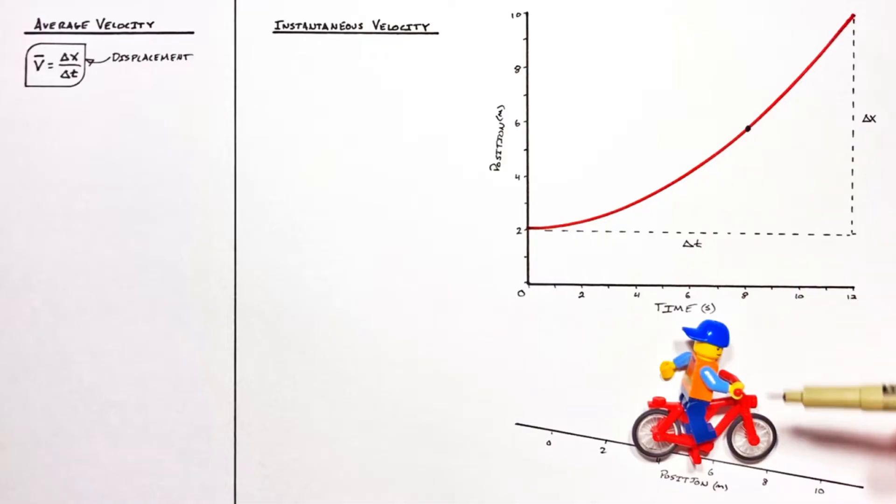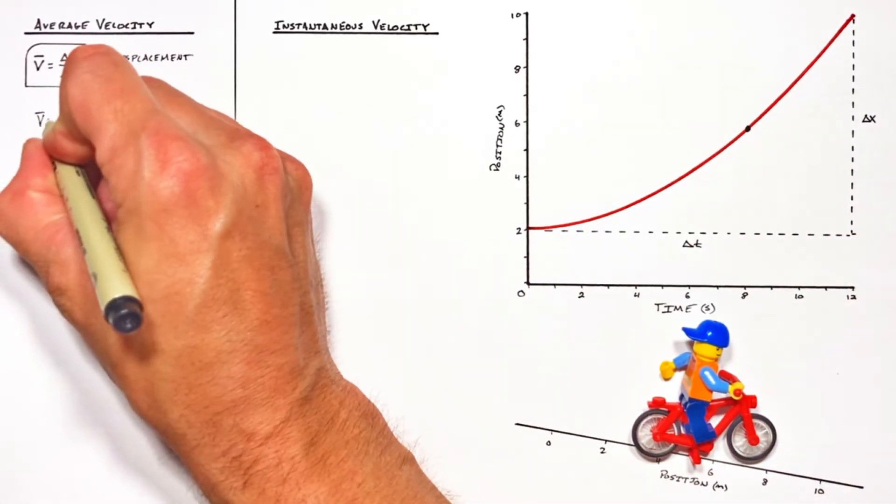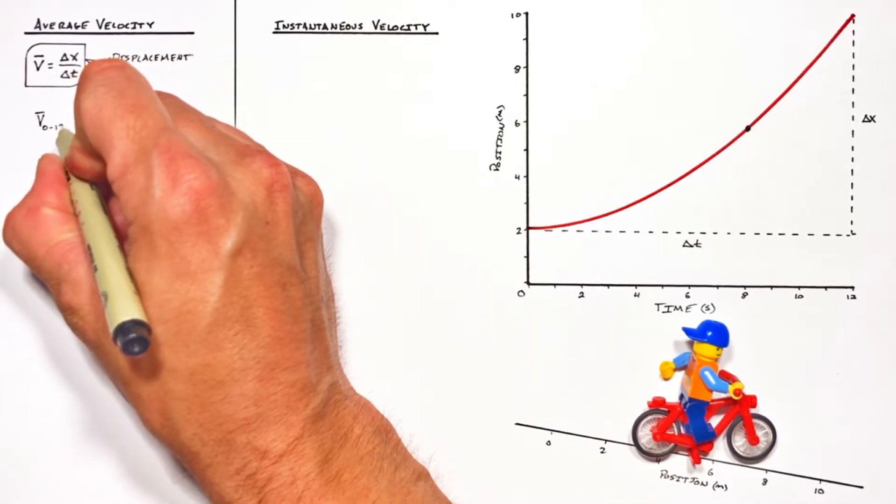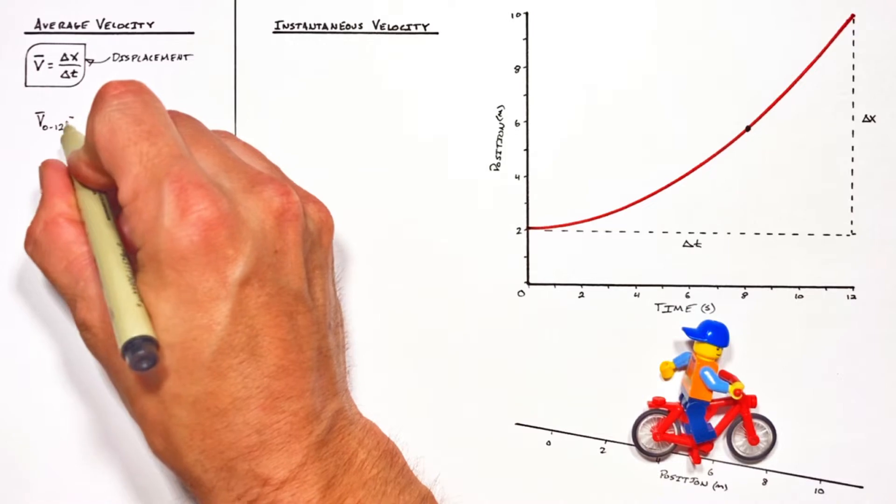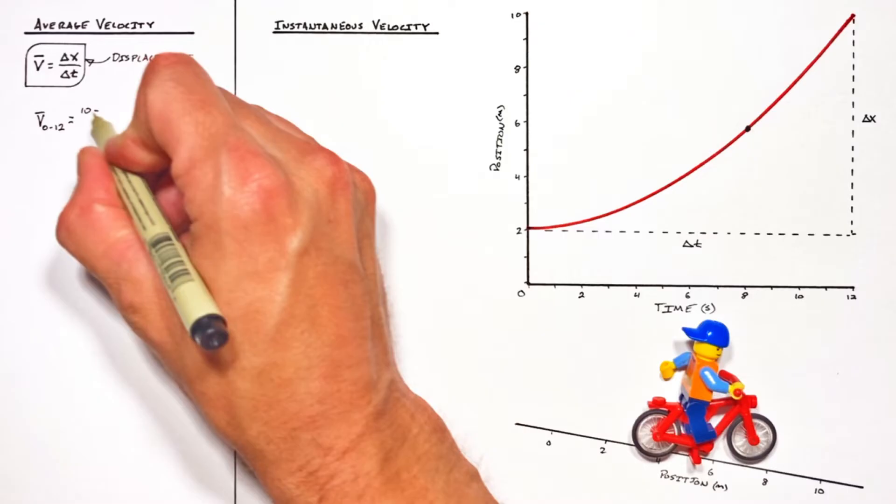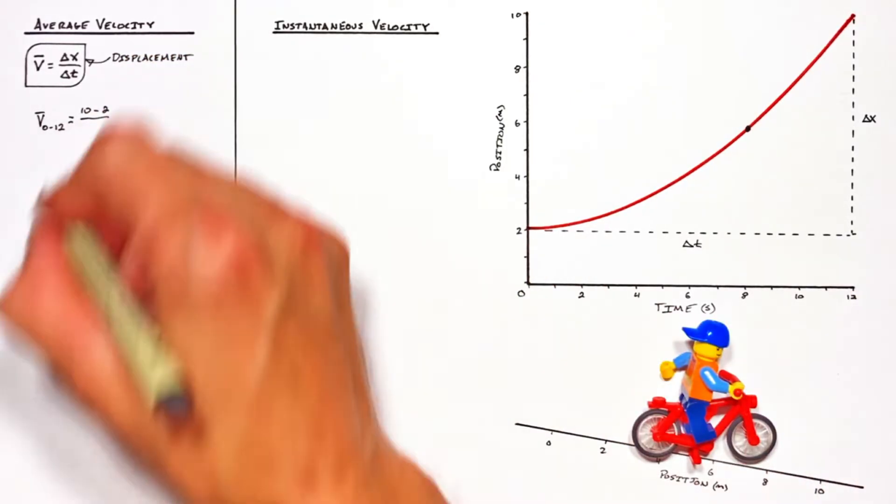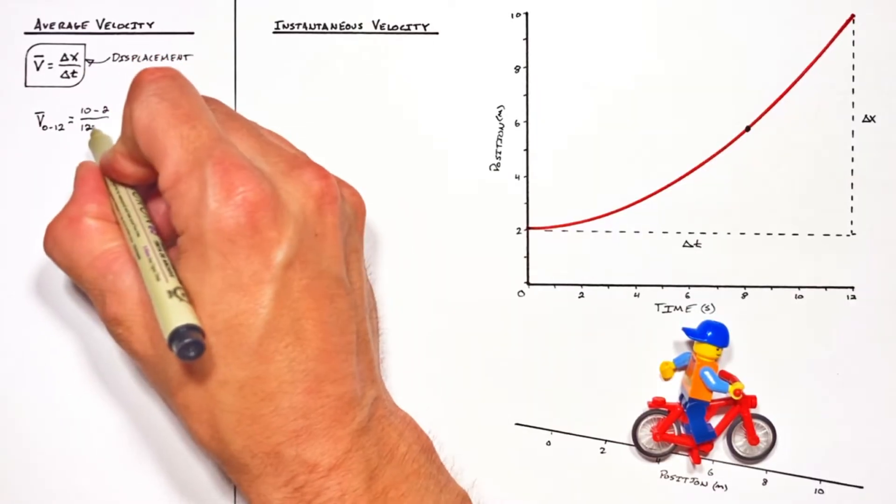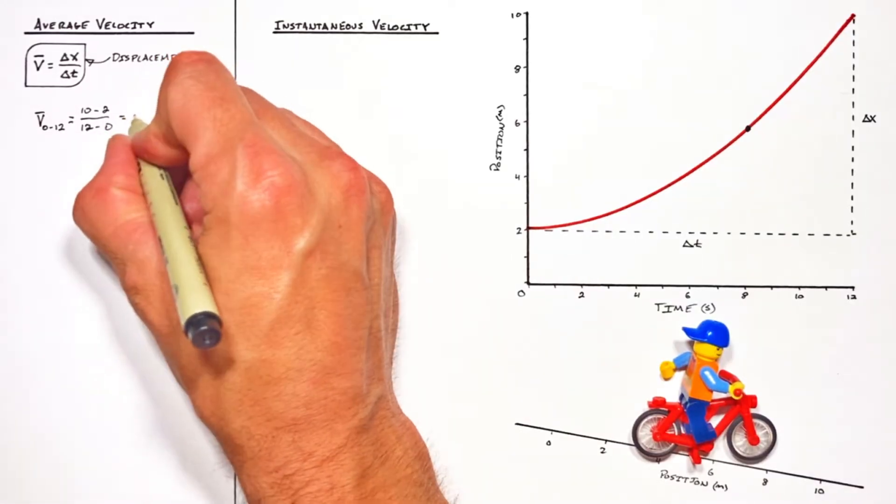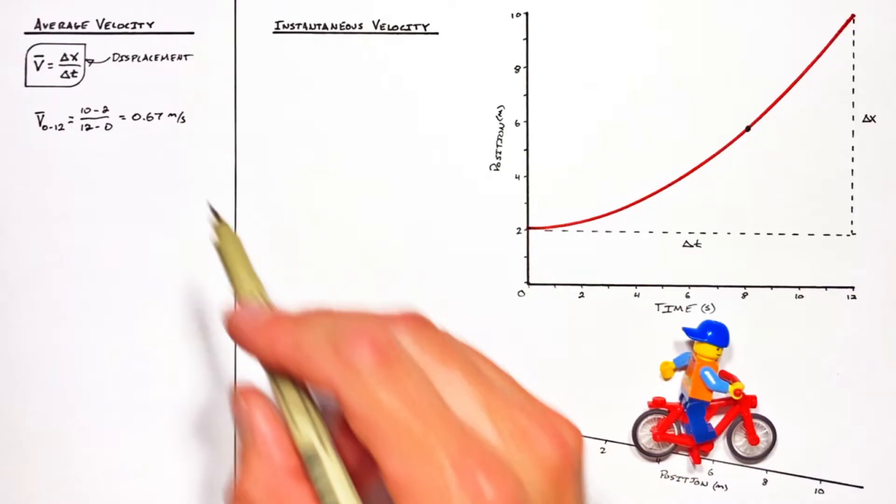So looking at the graph, we can see the little guy goes from an initial position of two to a final position of ten. So the average velocity from a time of zero to twelve is going to be ten, that's the final position, minus two, that's the initial position, divided by the total change in time, that's going to be twelve seconds, minus the initial time, that's zero. Giving us an average velocity of 0.67 meters per second.